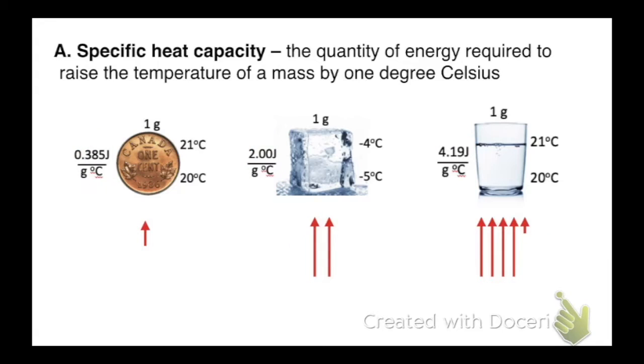So to raise the temperature one degree Celsius of one gram for a penny, I only have to put in 0.385 joules. In ice, I have to put in two joules. In water, I've got to heat it up 4.19 joules to move the temperature one degree Celsius. So that's what specific heat capacity is. It's how much energy is required to raise the temperature of a mass by one degree Celsius. So that all sounds really complicated, but we don't have to get too much deeper than that.